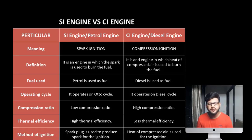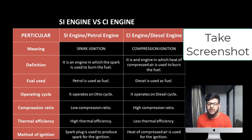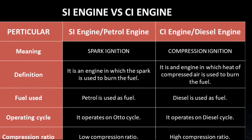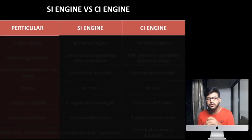Next point is method of ignition — which method is used to ignite the fuel. In SI engine we are using a spark plug, so spark ignition is the method. In CI engine we are using compressed air for ignition. To summarize the points so far: meaning — SI is spark ignition, CI is compression ignition; definition; fuel used — petrol and diesel; operating cycle — Otto and diesel; compression ratio — lower in SI, higher in CI; thermal efficiency — higher in petrol, lower in diesel; method of ignition — spark plug and compressed air.